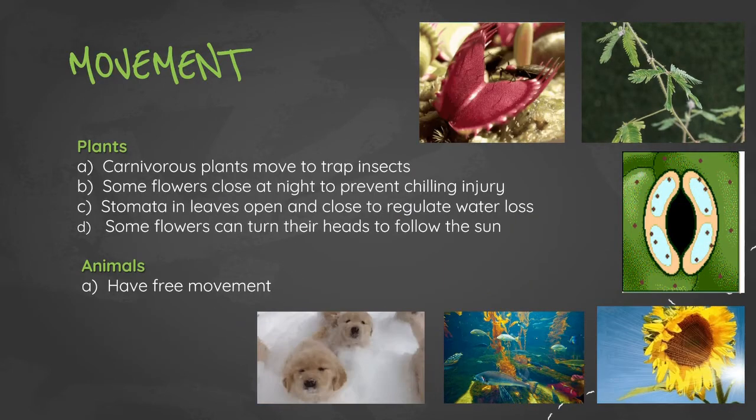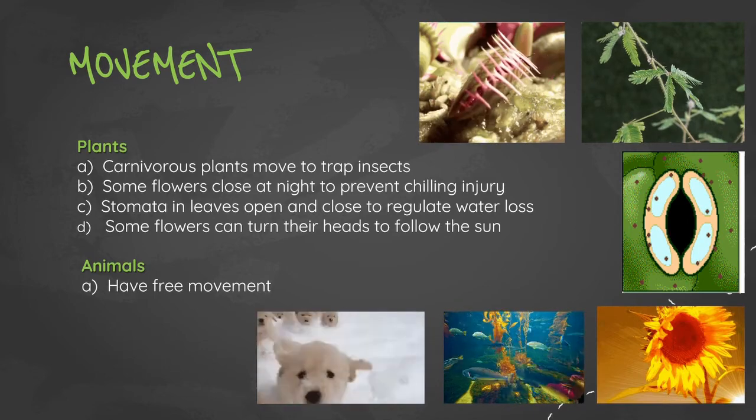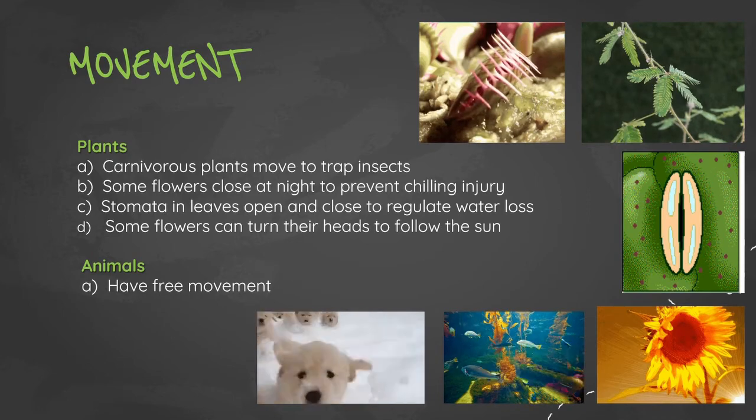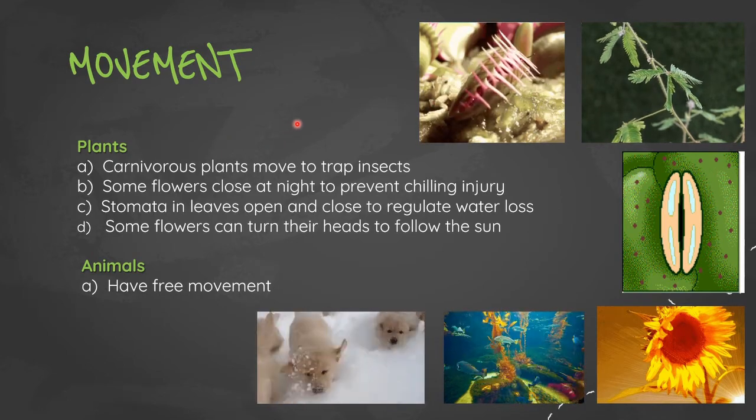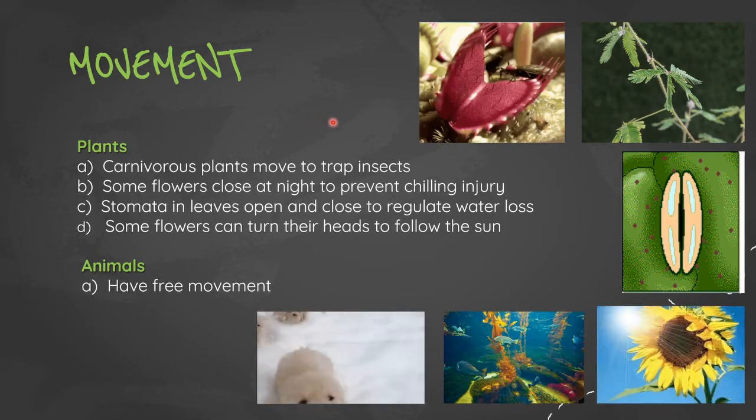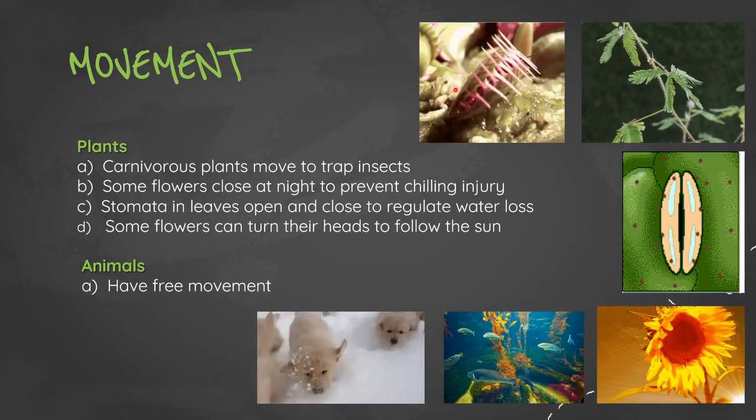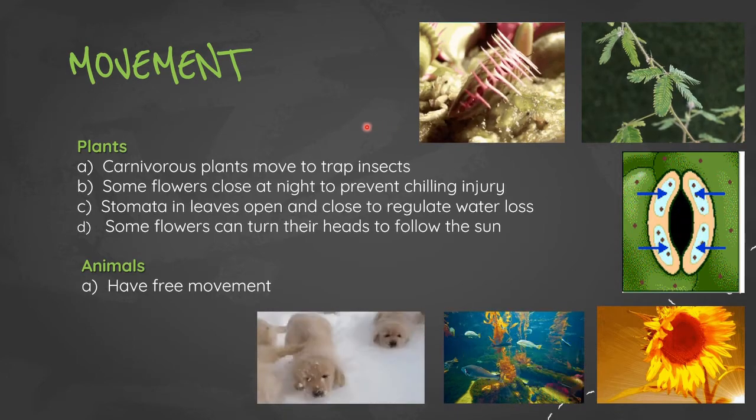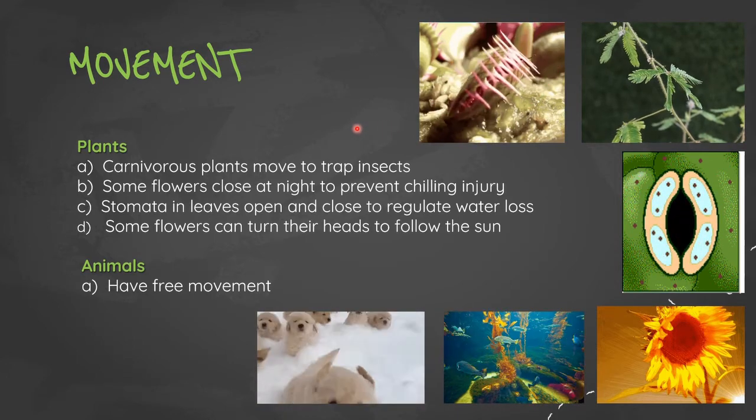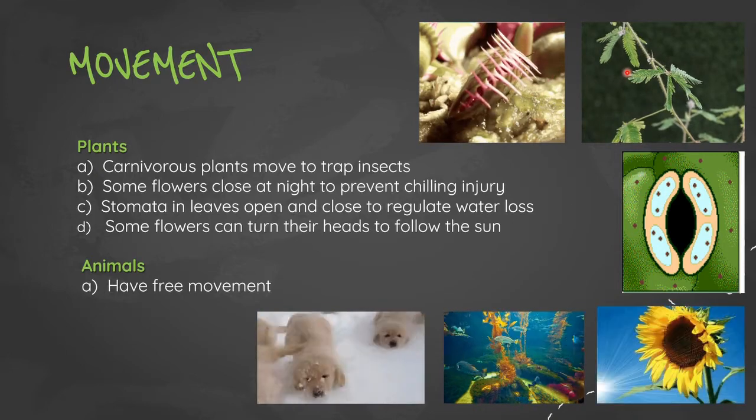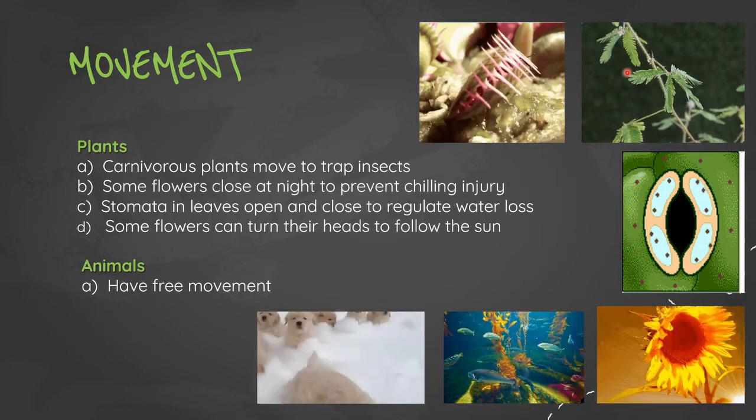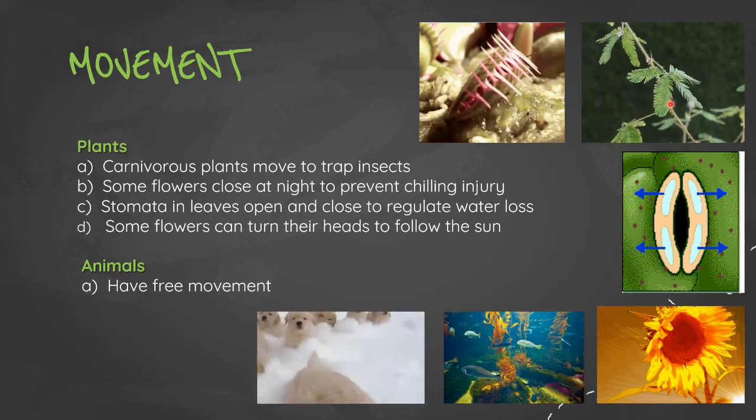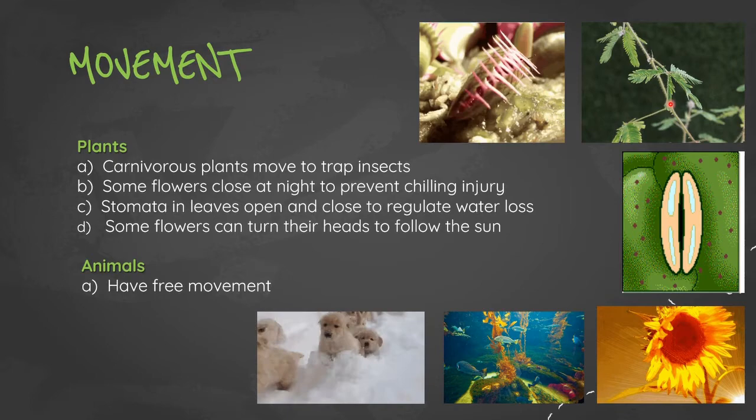The first characteristic we're going to start with is movement. Carnivorous plants, like the Venus fly trap, move to trap insects. Some plants close at night to prevent chilling injury because of the cold temperatures that can occur at night. Some flowers close their leaves to prevent extreme cold temperatures from affecting plant growth.